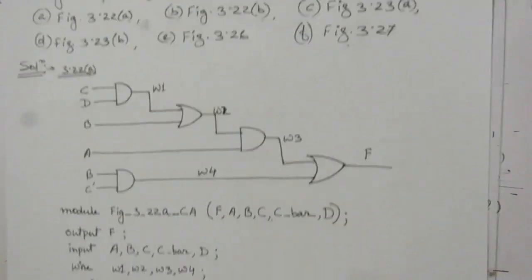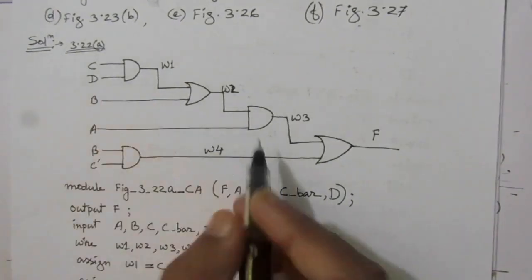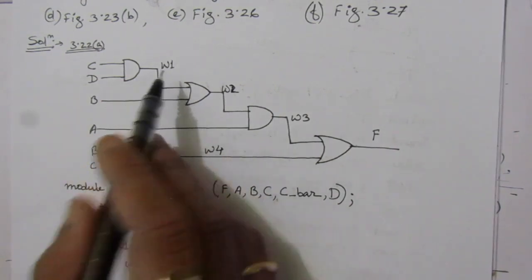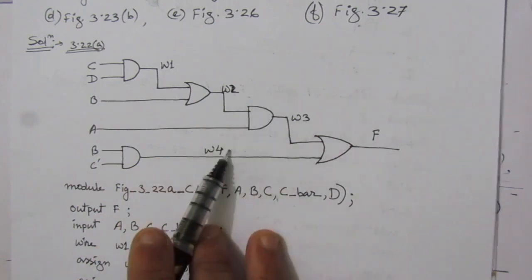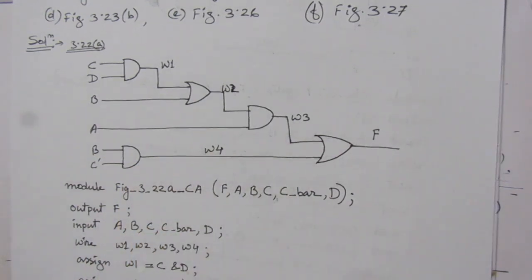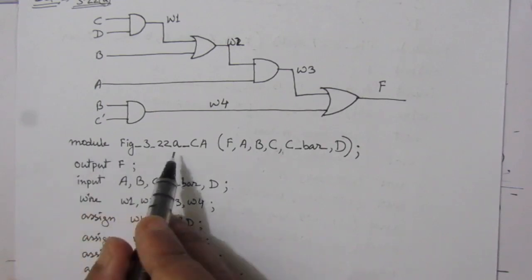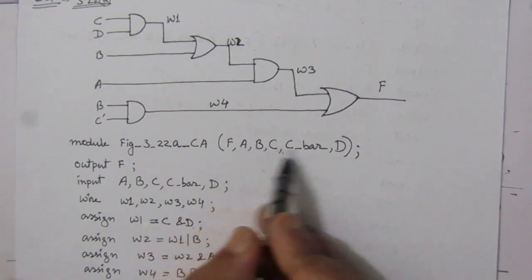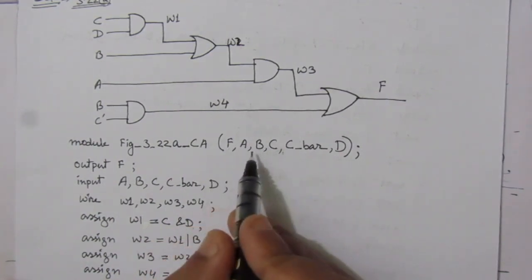The first part is problem 3.22a. This figure can be found inside the chapter. Here we have assigned the wires W1, W2, W3, and W4. We write the module with CA for continuous assignment. F is the output, and A, B, C, C-bar, and D are the inputs. We define the output F, the inputs, and the wires W1 through W4, terminating all lines with semicolons.